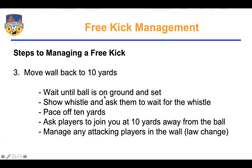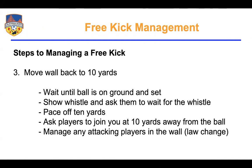Last thing after moving the wall back is managing any attackers in the wall. There was a law change over the summer. When there is a defensive wall of at least three players, all attacking team players must be at least one meter from that wall. One meter away can mean one meter behind it, in front of it, or to the sides — it doesn't matter in what direction, just that they are one meter away.